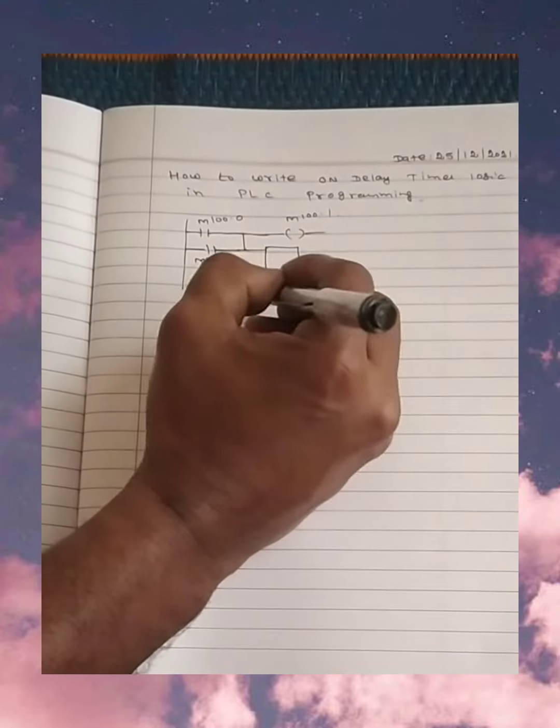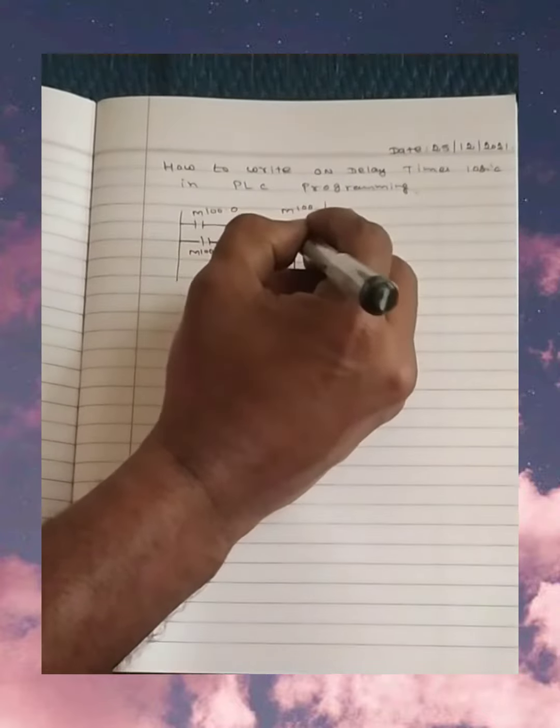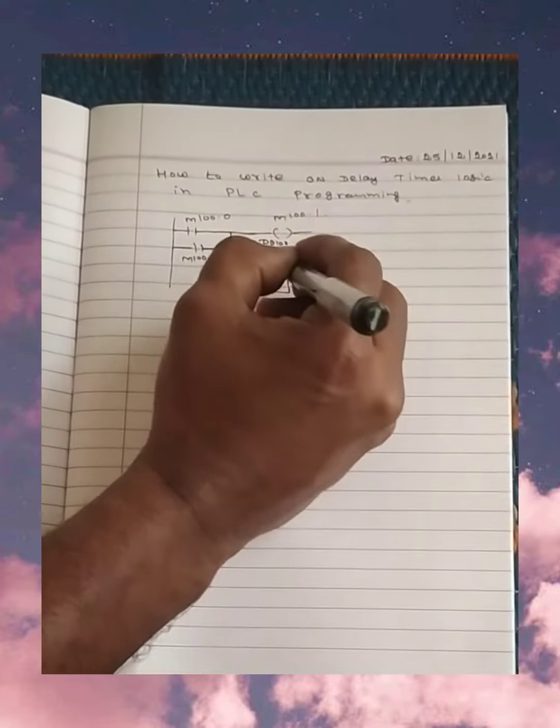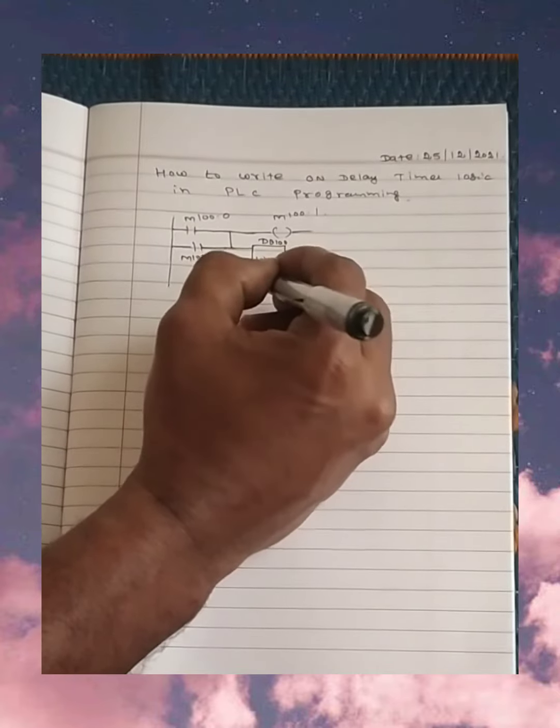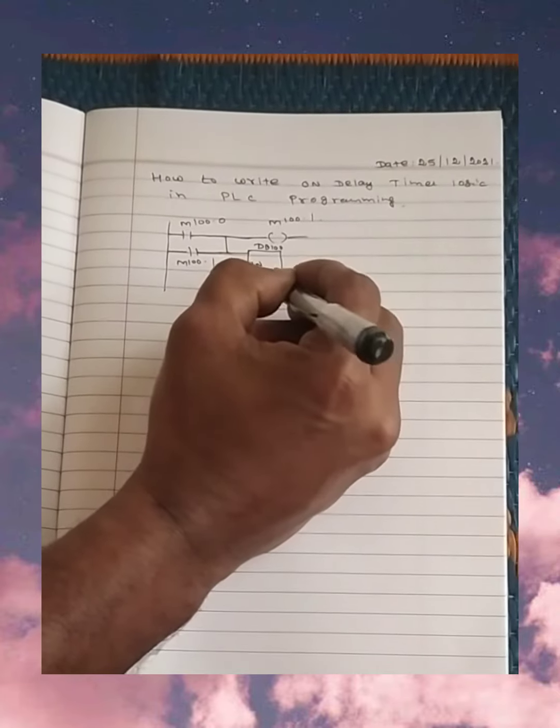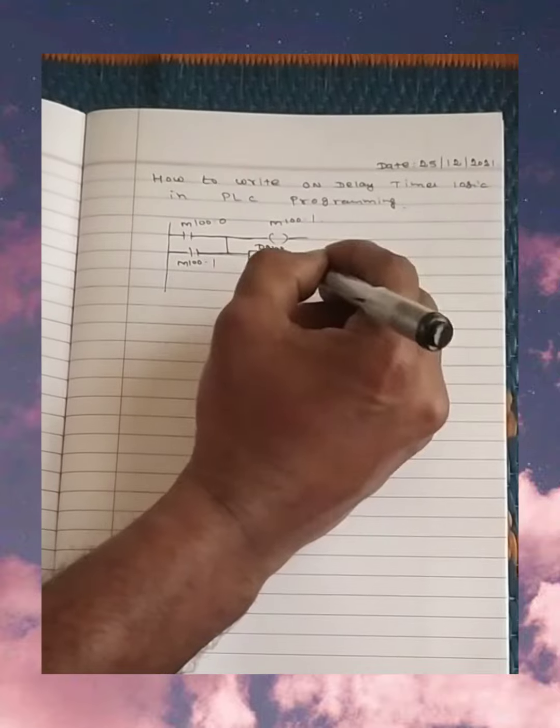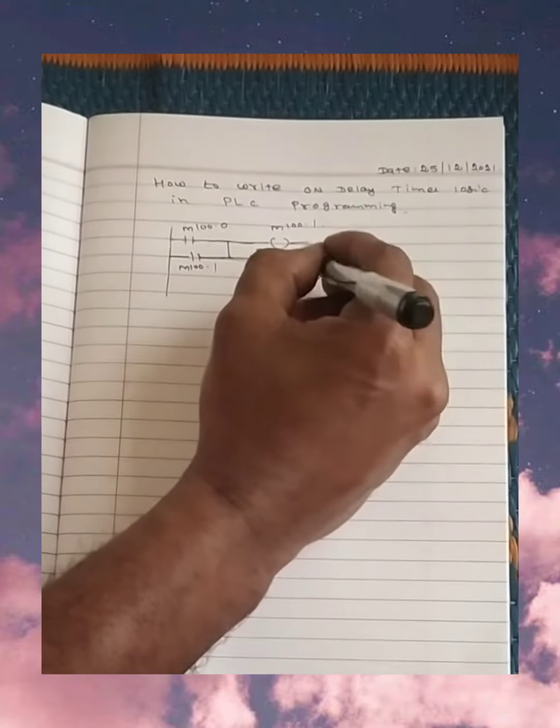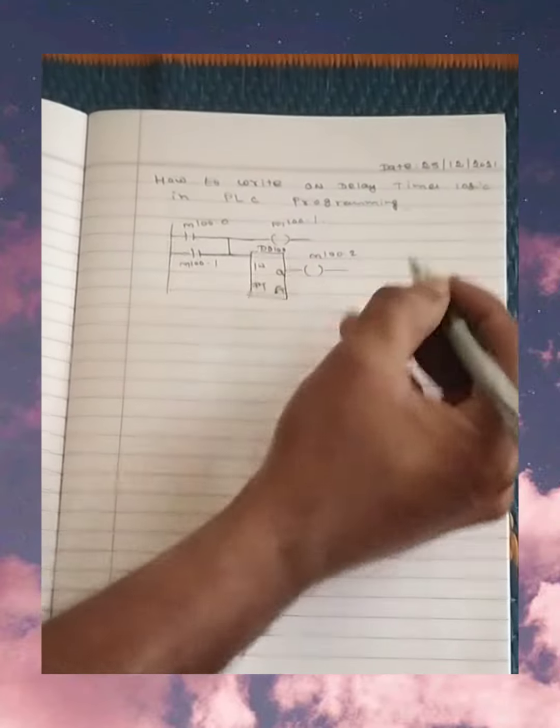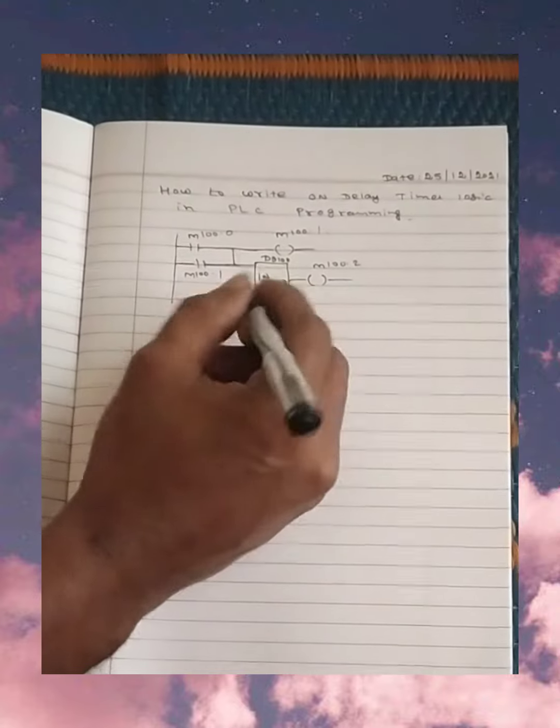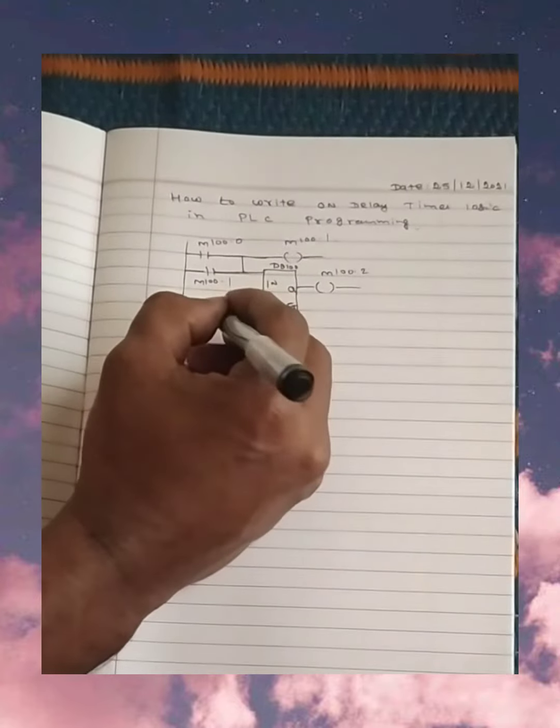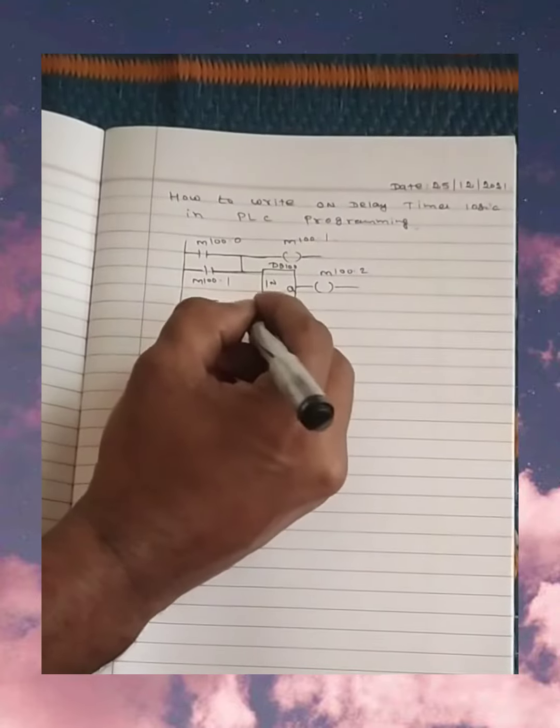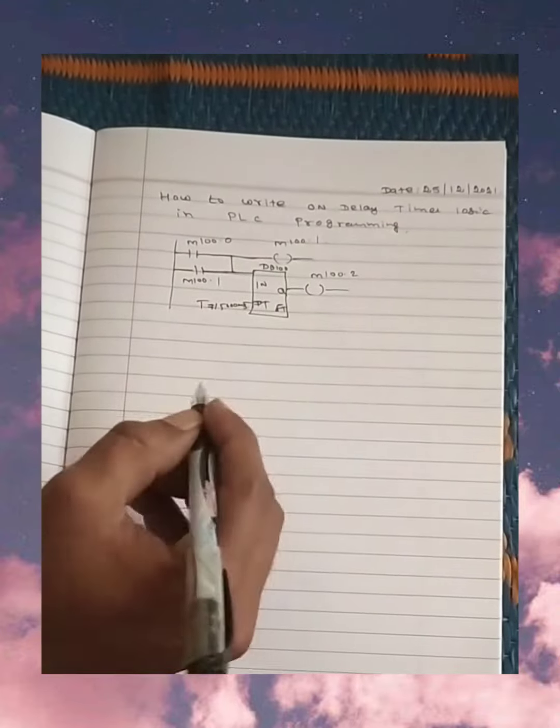Say like DB100, and one more coil I am turning on, it is M100.2. So for this 5 second model, I have to give 5000 millisecond.